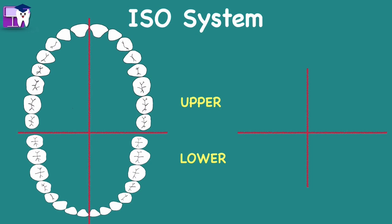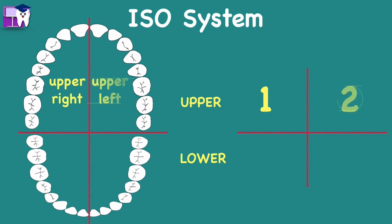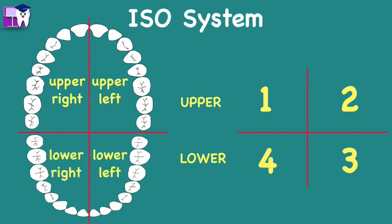The numbers associated with each quadrant of permanent teeth are: Number 1, the upper right section of teeth; Number 2, the upper left section of teeth; Number 3, the lower left section of teeth; and Number 4, the lower right section of teeth.